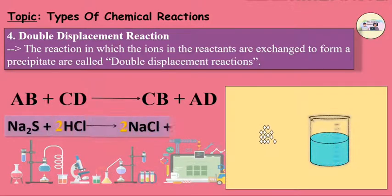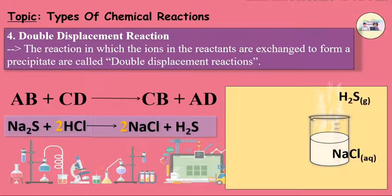For example, Na2S plus 2HCl produces 2NaCl plus H2S. In this reaction, S is combined with H2, also Na is combined with Cl.